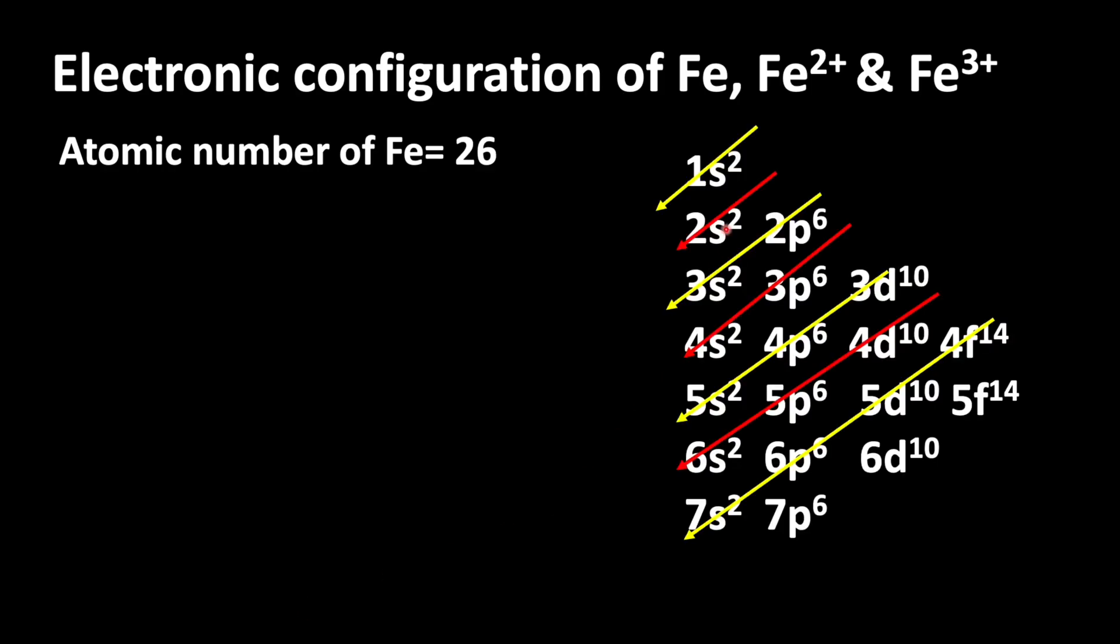Here you can see the order of filling orbitals in increasing energy level. It means after filling 1s orbital, then only electrons can enter into 2s orbital, then 2p, 3s, 3p, 4s, 3d. Using this, let us write the electronic configuration of iron.